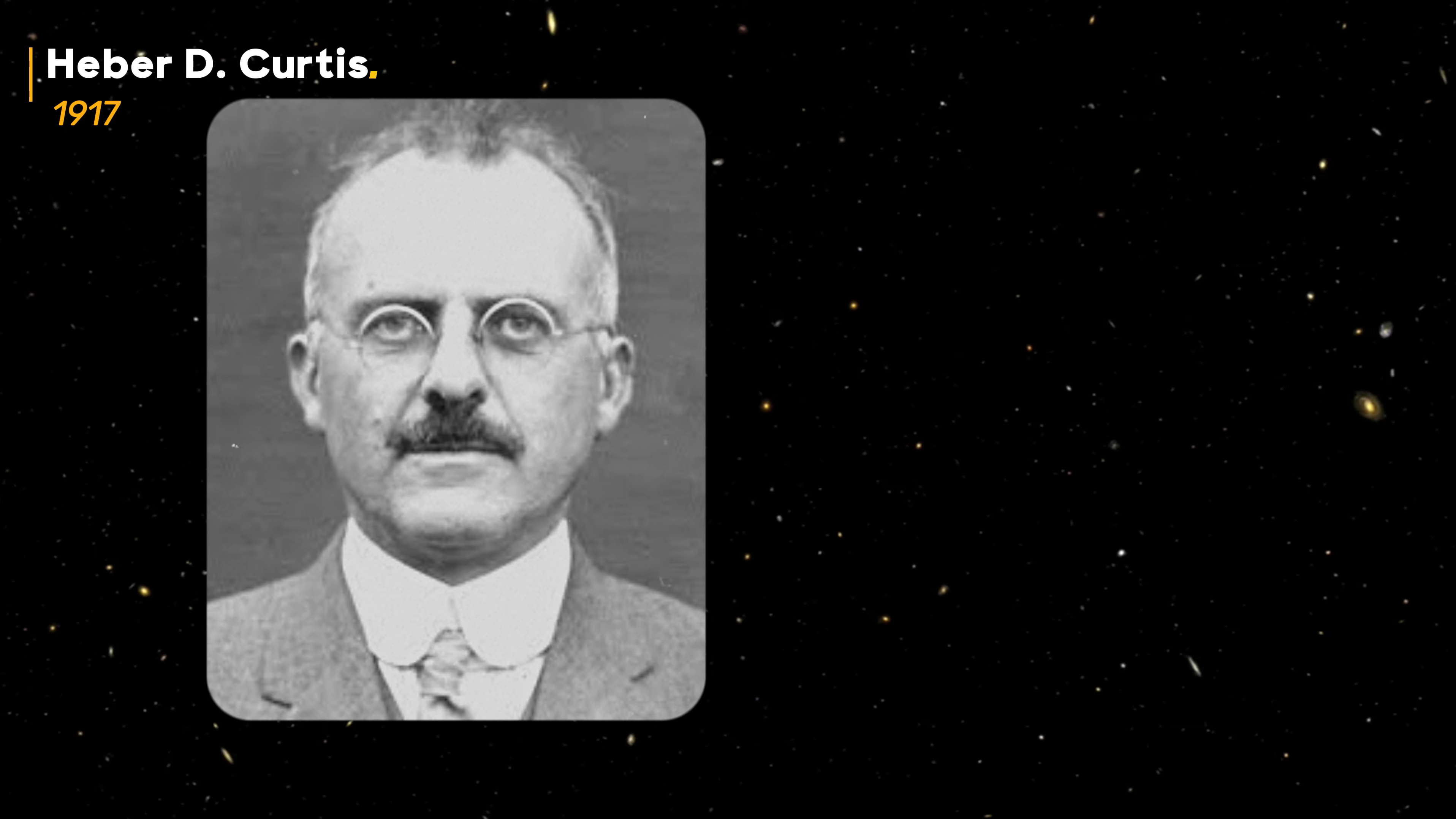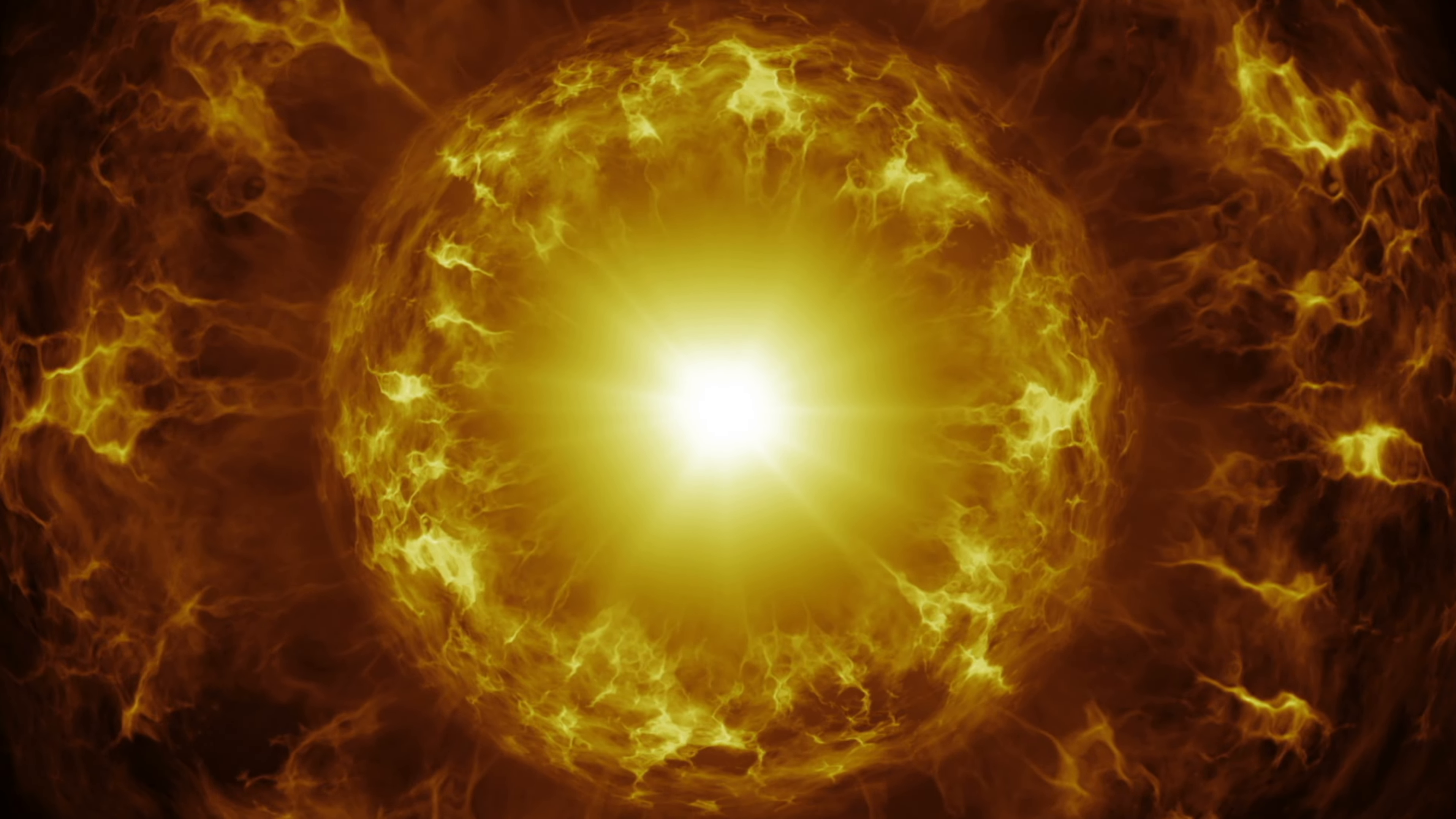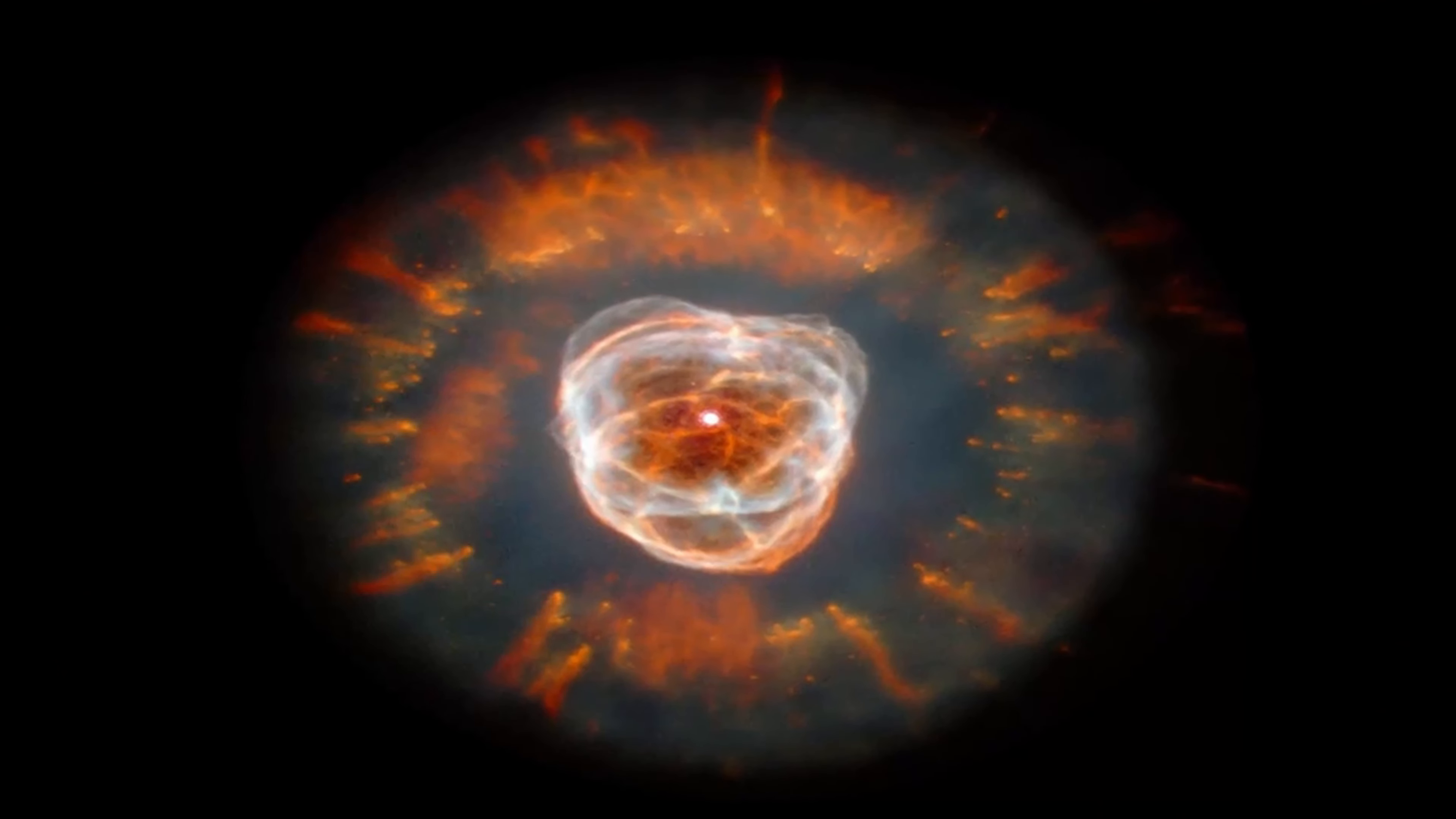Then, in 1917, Heber D. Curtis witnessed a nova, a sudden burst of brightness resembling a new star, within what was then referred to as the Andromeda Nebula. A nova is a strong, rapid increase in the brightness of a star that slowly fades over weeks or months, but we did not know this back then.